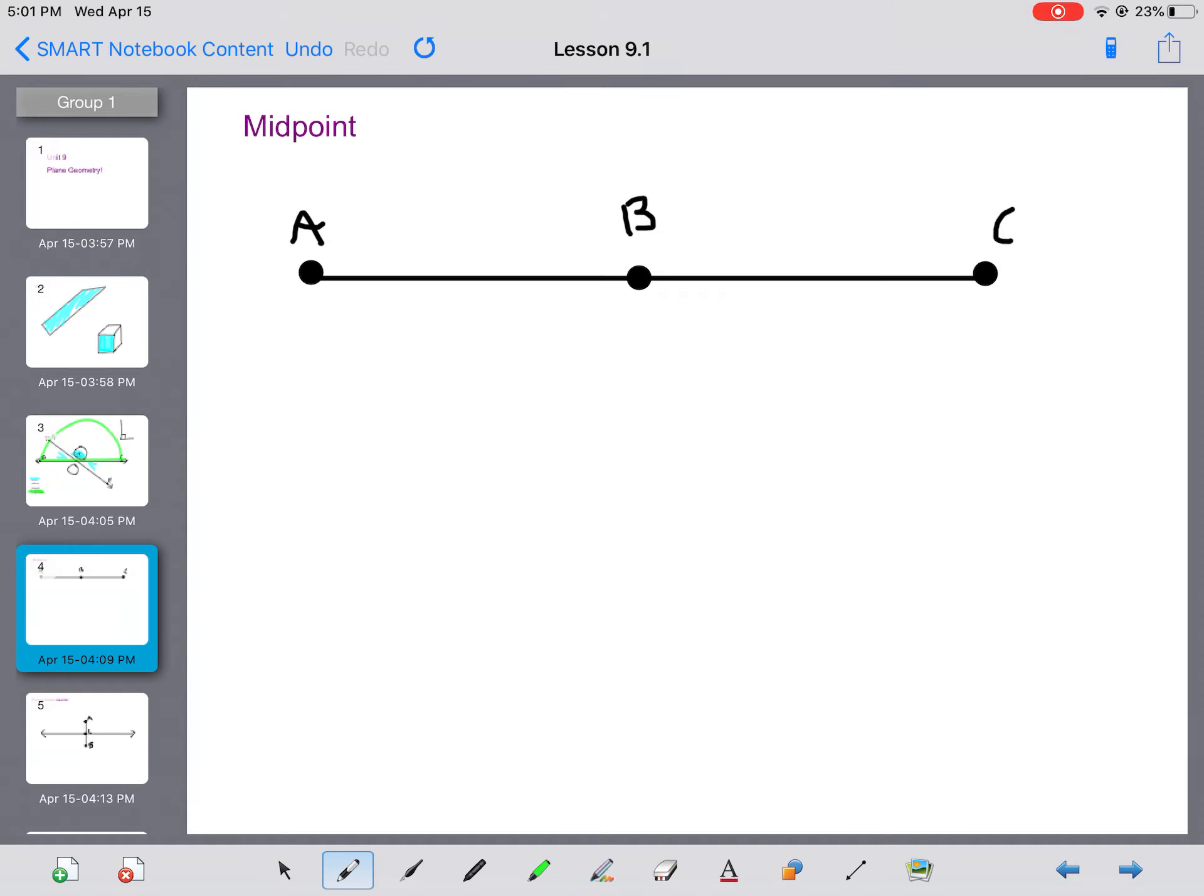The next thing I want to go over with you is the midpoint. A midpoint is halfway in between two endpoints of a line segment. So here I have a line segment, and B is the midpoint. It's halfway in between. This is helpful information. For example, if I said to you, I have line segment AC, that's how I write it. Notice I do not have little arrows on the end. I'm just talking about a segment. I'm not talking about a line that goes on forever.